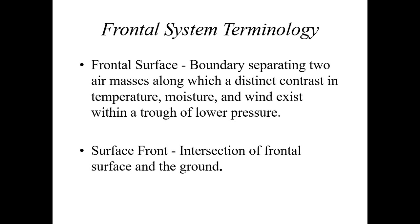Let's first talk about what a frontal surface is. A frontal surface is basically the boundary separating two air masses. With any kind of frontal surface, you have two different air masses on both sides of the front. This boundary separates two air masses along which there is a distinct contrast in temperature. In addition to temperature changes, we have moisture changes, and the wind is going to shift along with barometric pressure changes as frontal systems approach and move through. The surface front itself is defined as the intersection of the frontal surface and the ground.